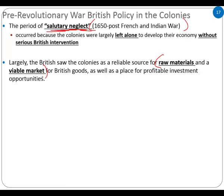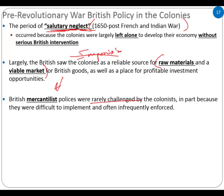In true imperial practice, what we have is the need for expansion of markets and raw materials. All reasons you establish a sphere of influence, protectorate, or colony is to benefit the mother country — typically always economically. British mercantilist policies were rarely challenged because they're difficult to implement and infrequently enforced. Basically, you have a set of economic bylaws in existence that everyone, for the most part, is ignoring. If a teacher never enforces the cell phone policy, students keep bringing cell phones — same thing here. There are laws in place, but if they're never enforced, who cares?